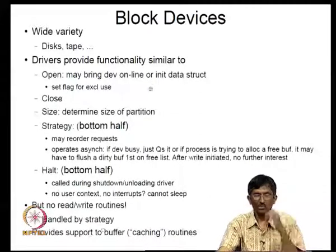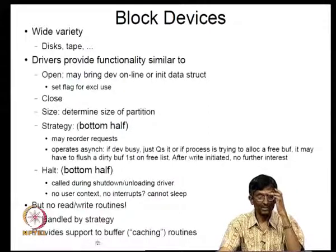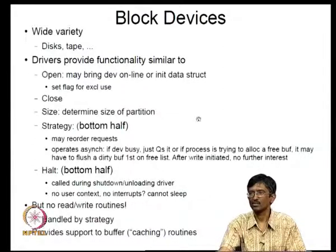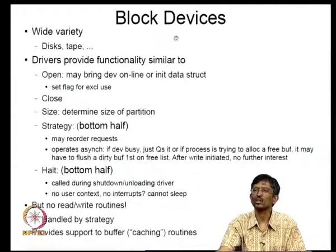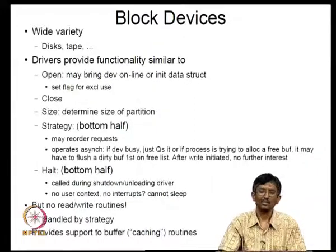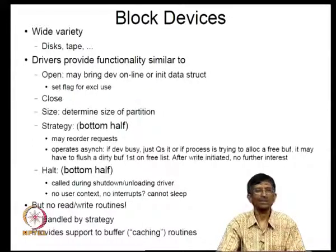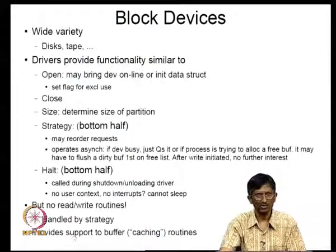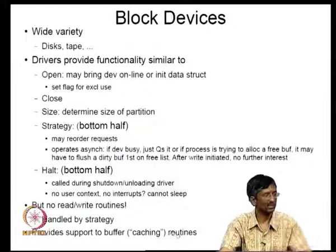Block devices provide support to buffer caching routines. Because block devices like disks and tapes have historically been slow, caching is a central part of their design. The key invariant is that any given block must exist in exactly one buffer — having it in two buffers would cause inconsistency.